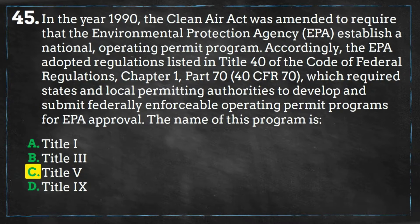A limited number of smaller sources of air pollution, often called area, minor, or non-major sources, must also get Title V permits.